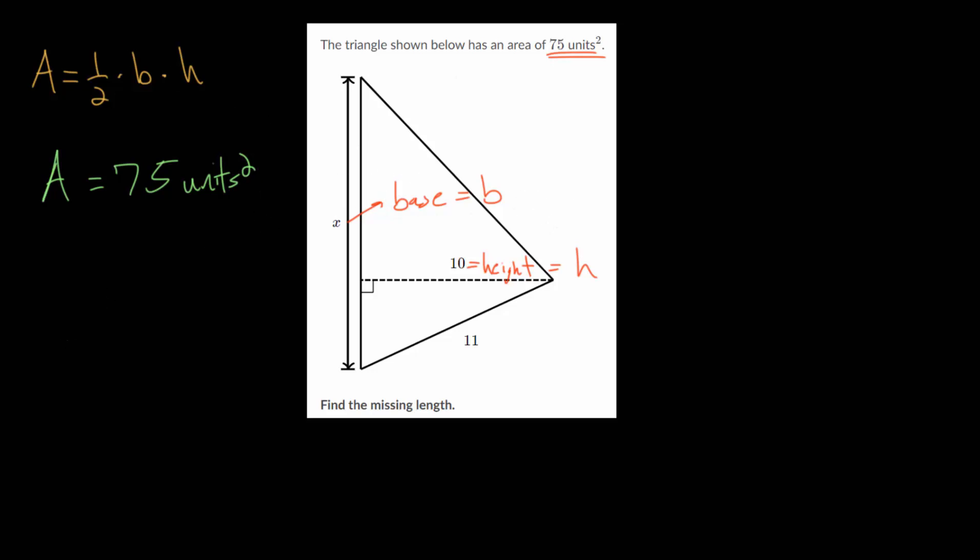Let's just plug everything in. We have that the area, which is 75, is equal to 1/2 the base, which is x, our missing side length, multiplied by 10. We can take 1/2 and multiply it by 10, that's just 5. So we get 75 equals 5 times x.